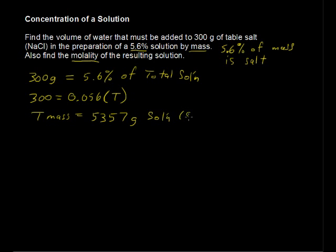That's the salt plus the water. So all we have to do to find the amount of water is simply subtract. We subtract the 300 grams of salt, and we are left with a total of 5,057 grams of water.